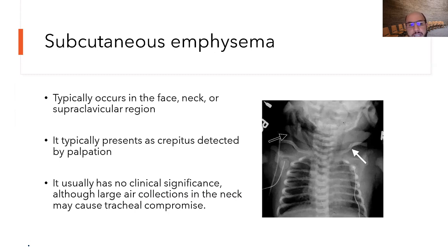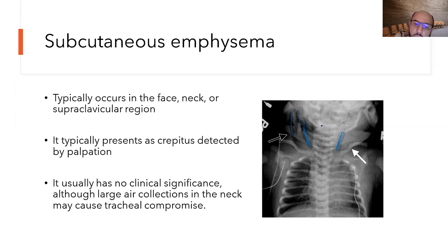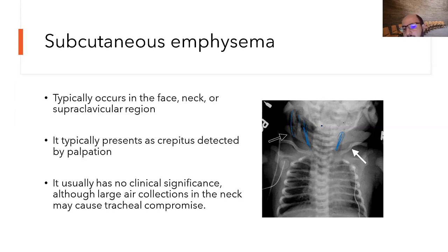Subcutaneous emphysema typically occurs in the face, neck, or subscapular region, and is usually diagnosed clinically — you can see air clearly in the soft tissues. Clinically it is detected by crepitus on palpation: the area looks swollen and when you put your finger on it, you feel that crackling sensation. Usually it has no clinical significance, except in very large cases where air in the neck blocks the entire airway and causes difficulty with intubation — in which case tracheostomy may be required.